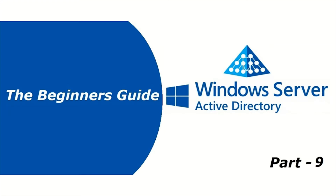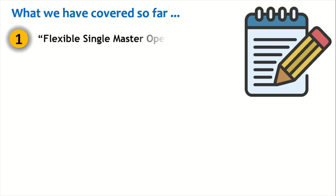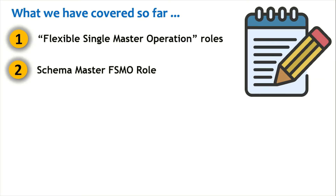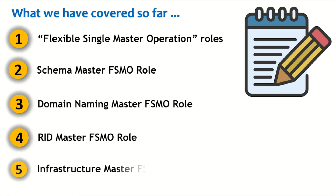Hello everyone, hope you are doing well. Welcome to part 9 of our beginner's guide for Windows Server Active Directory. Let's see what we have covered so far: we have understood Flexible Single Master Operation roles, and we have gone through the Schema Master role, Domain Naming Master, RID Master, and the Infrastructure Master in our previous sessions.